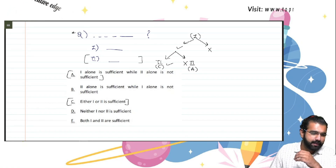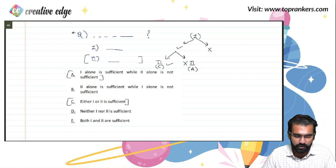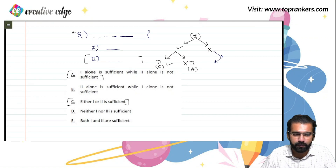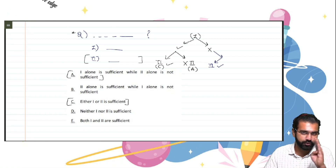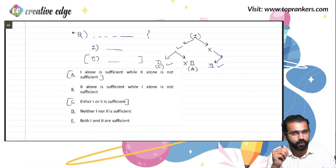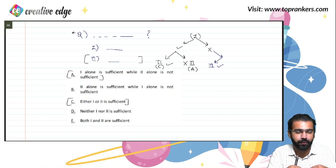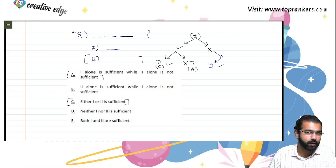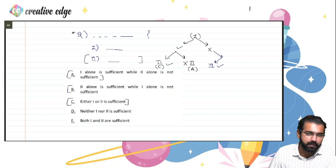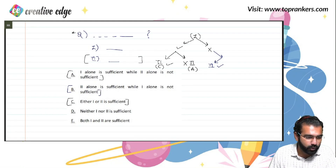Apart from that, let's say statement 1 alone was not sufficient. What you do is try to solve it with the help of statement 2 alone. If you are able to solve it with statement 2 alone, you mark option B — that statement 2 alone is sufficient while statement 1 alone was not sufficient.